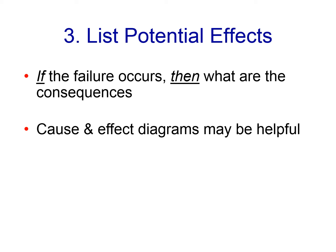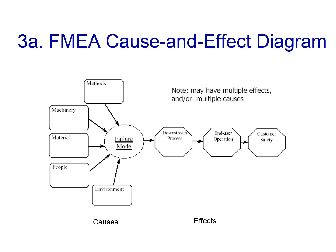The third step in a FMEA study is to list potential effects for each failure mode. With the failure modes listed, the team identifies the effect of each should a failure occur. It is helpful to think about this step as an if-then process: if the failure occurs, then what will happen? Some failure modes may have only one effect while others may have many. It would also be helpful to construct a cause and effect diagram in this step, showing causes, failure modes, and effects.